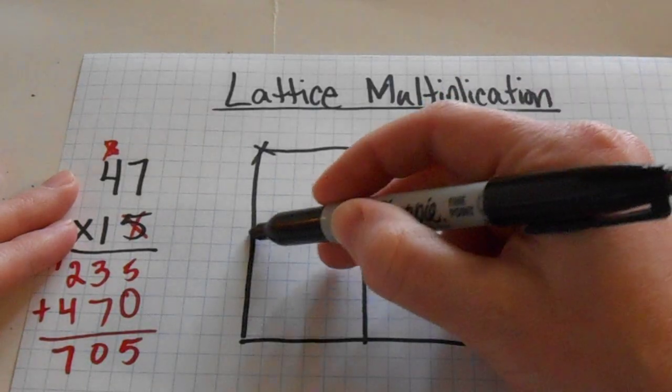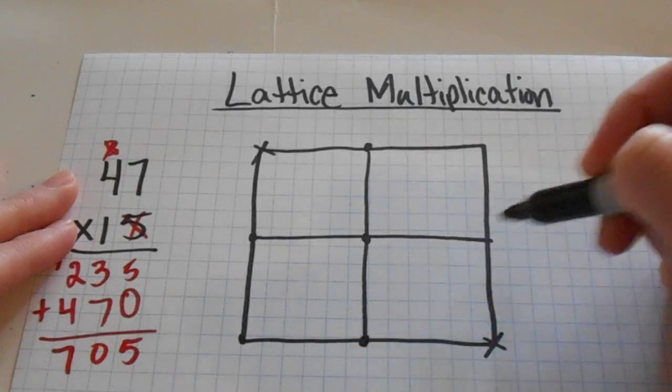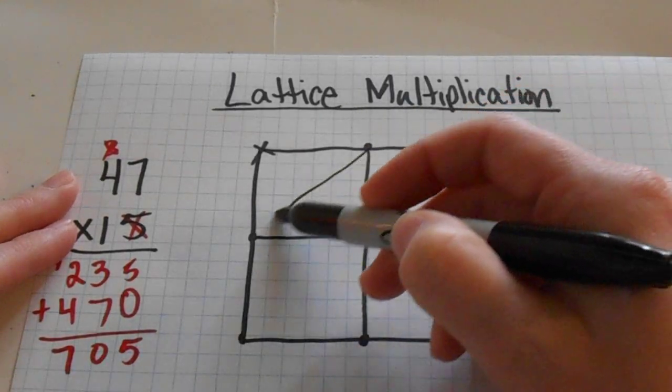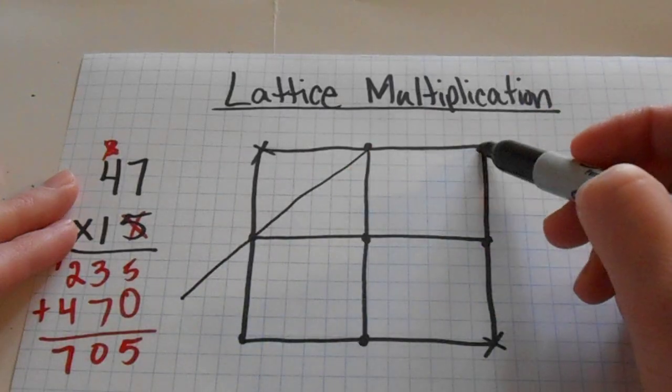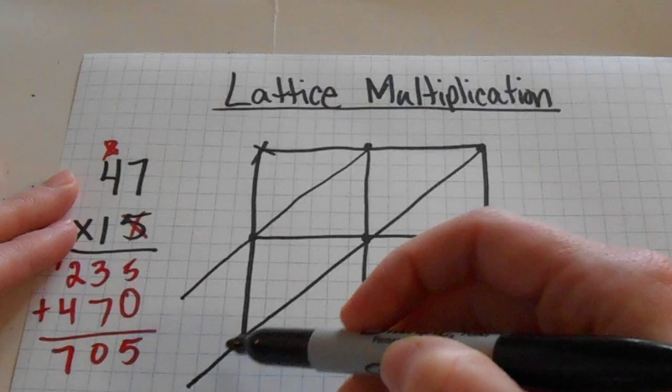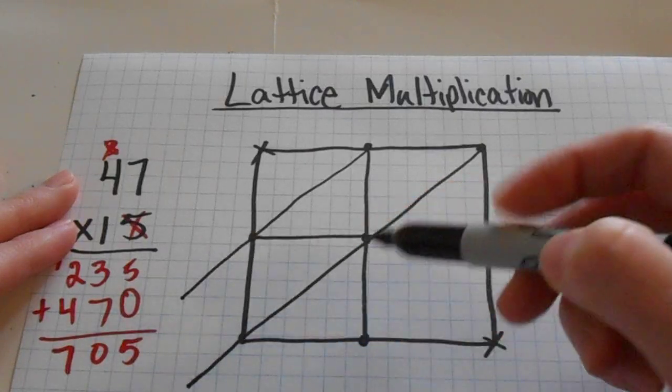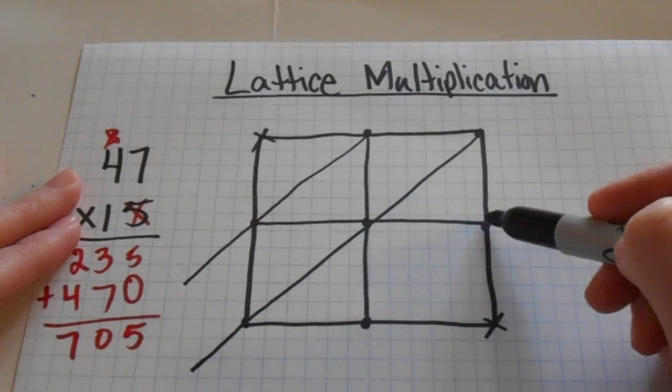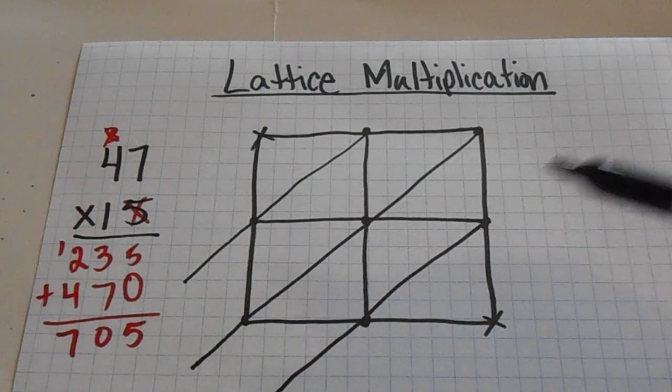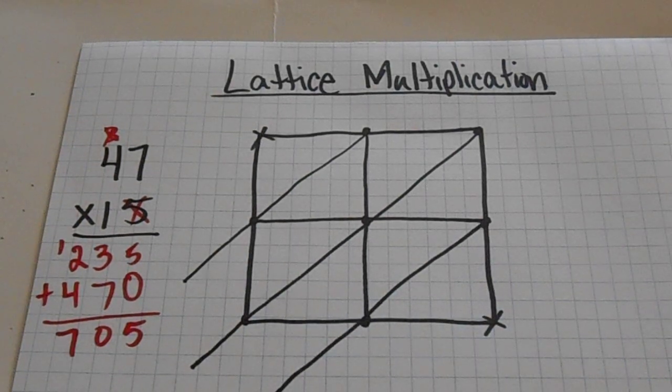I also can put dots in all of the corners of the remaining boxes. And then you're just connecting the dots. Now you want to draw diagonals past the box down here to the left and to the bottom. And I'll show you why in just a moment. So now we've got our boxes set up.